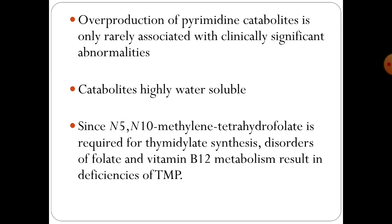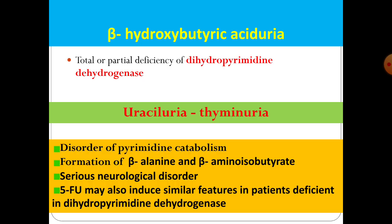One clinical consideration: deficiency of folic acid may be associated with this pathway, or even vitamin B12 deficiency, because tetrahydrofolate is required for thymidylate synthesis. Due to total or partial deficiency of dihydropyrimidine dehydrogenase, beta-hydroxybutyric aciduria may be seen. This is one of the diseases that has been recently identified.